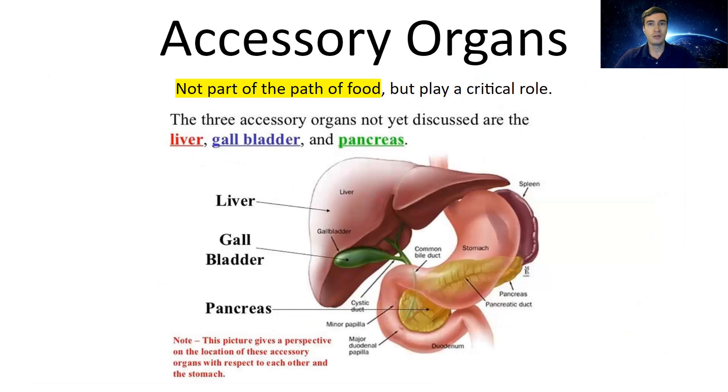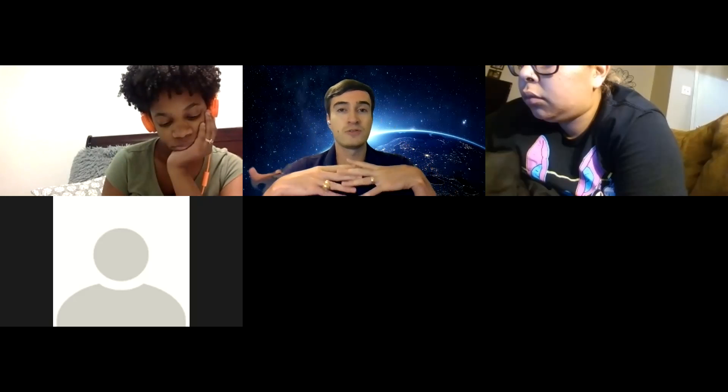To summarize the GI tract: food goes in through your mouth, passes through your esophagus down your throat, goes through your stomach where it gets mushed up, goes through your small intestine where nutrients get absorbed, and then goes through your large intestine where water gets absorbed and solid waste gets packed down. That covers all the organs that food physically touches.